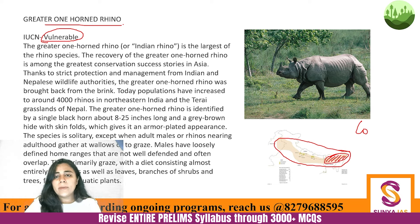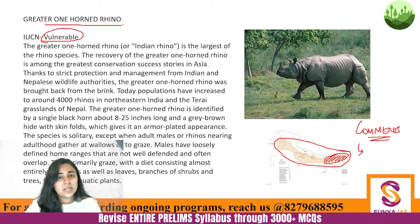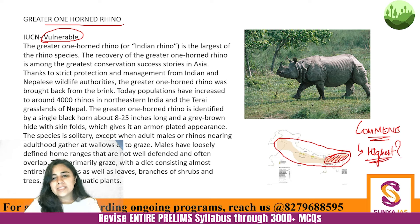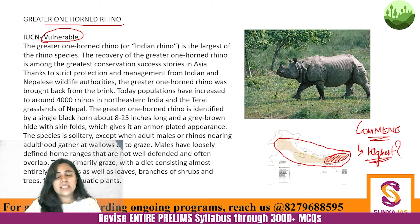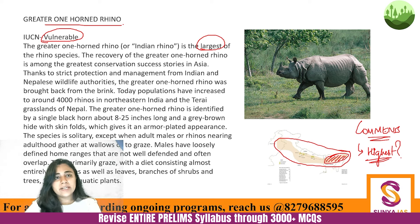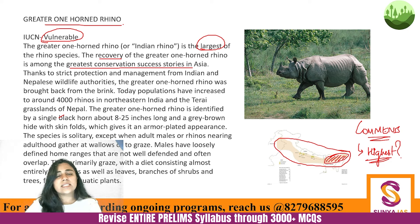Tell me in the comments which national park or protected area has the highest Greater One-Horned Rhino population — it might not be Kaziranga, you will be surprised. The Greater One-Horned Rhino is the largest of all rhino species, and its recovery is among the greatest conservation success stories in Asia.